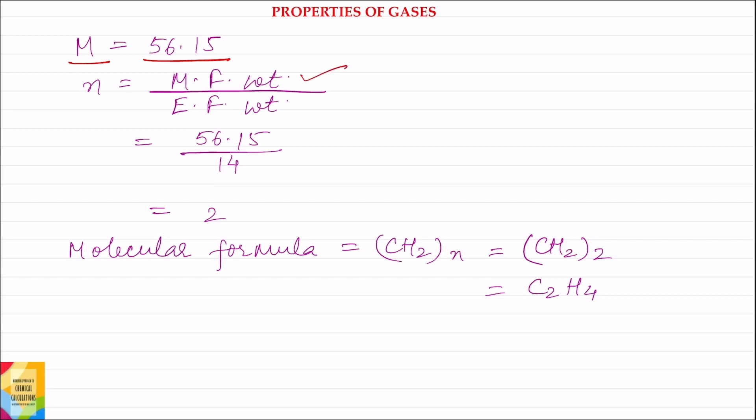Now molecular formula weight divided by empirical formula weight is equal to 56.15 divided by 14, which is equal to 2. Now this ratio is denoted by N. So the molecular formula will be equal to CH2 whole N. Putting the value of N, we get the molecular formula as CH2 whole twice, which is equal to C2H4.